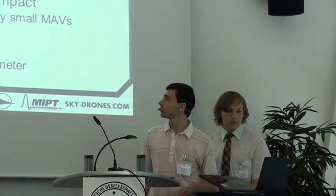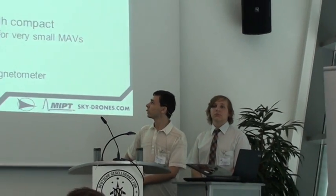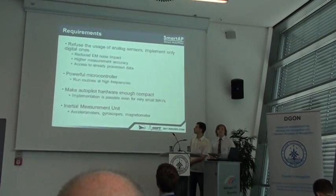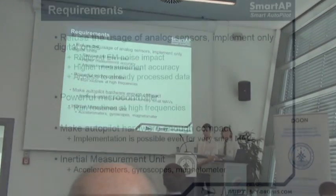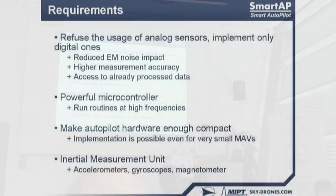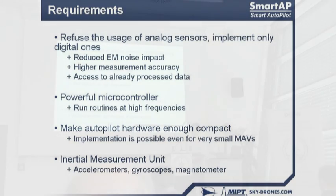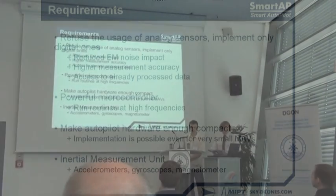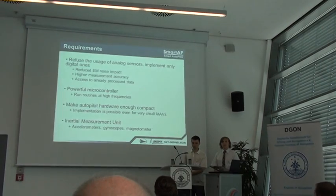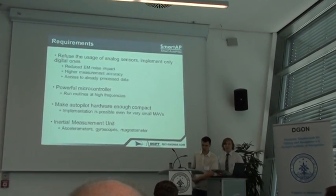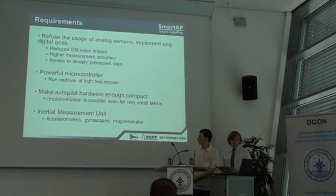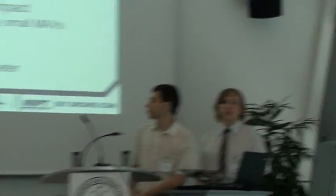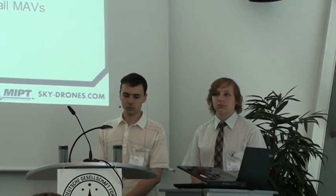These are our main requirements outlined before we started work. The most significant requirement was to refuse the usage of analog sensors and implement only digital ones. This has several advantages: reduced noise impact, higher measurement accuracy, and access to already processed data, so the main microcontroller needs to spend less time on data processing. The autopilot also requires a powerful microcontroller that can run routines and processes at high frequencies.